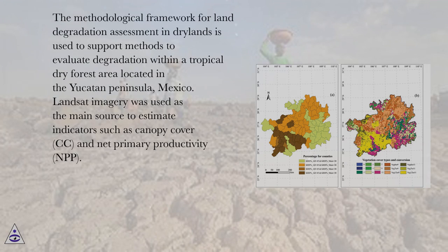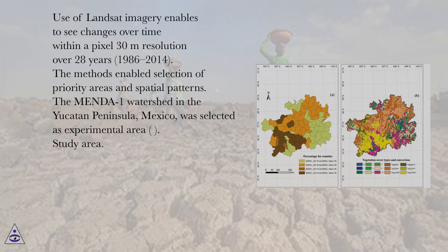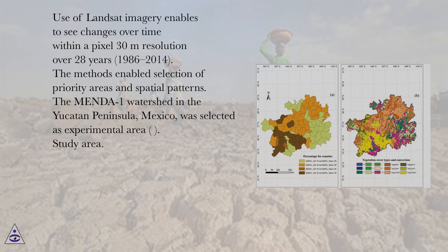Landsat imagery was used as the main source to estimate indicators such as canopy cover (CC) and net primary productivity (NPP). Use of Landsat imagery enables detection of changes over time within a pixel at 30-meter resolution over 28 years, from 1986 to 2014.